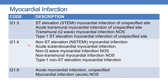Next code I21.4 — non-ST elevation myocardial infarction (NSTEMI NOS), or Type 1 non-ST elevation myocardial infarction, or non-transmural myocardial infarction. When the physician documents transmural myocardial infarction, the code is I21.3 by default because it is NOS. When the physician documents non-transmural myocardial infarction, the code is I21.4. Also coded for non-Q-wave myocardial infarction and acute subendocardial myocardial infarction.